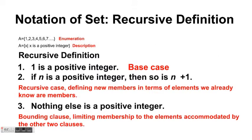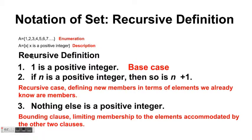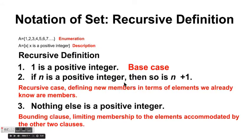The third way to define a set is recursive definition, which is a bit more complex. First, we define a base case — for example, to define the set of all positive integers, the base case is: 1 is a positive integer. Then we apply a recursive rule that defines new members in terms of elements we already know: if n is a positive integer, then n+1 is also a positive integer.